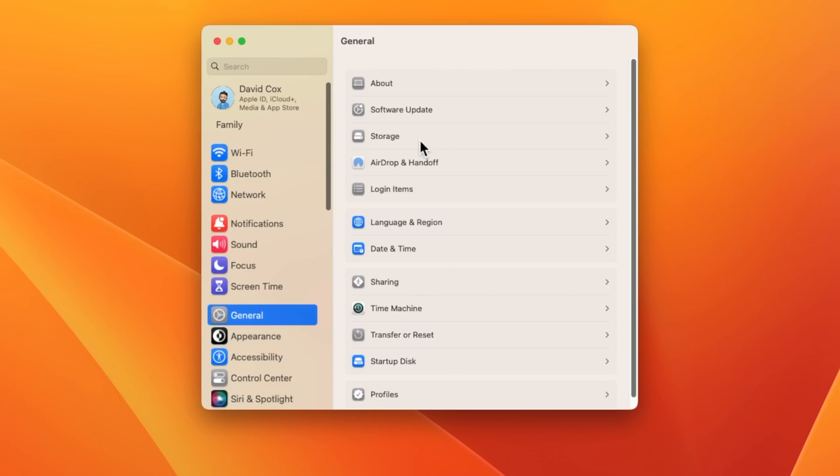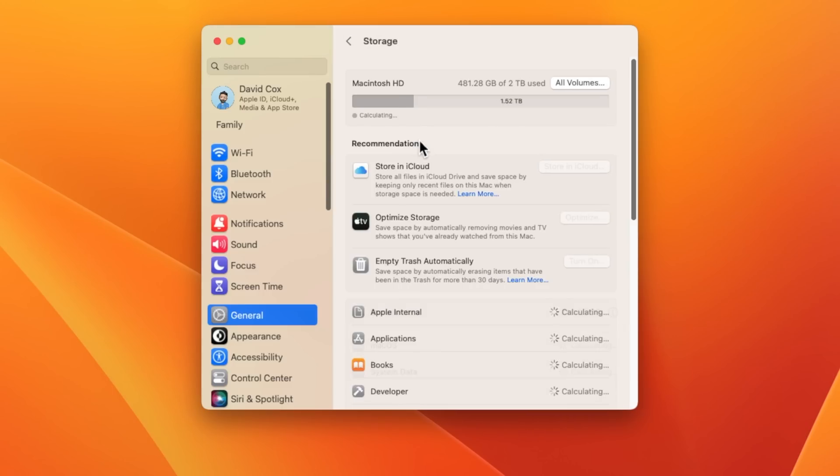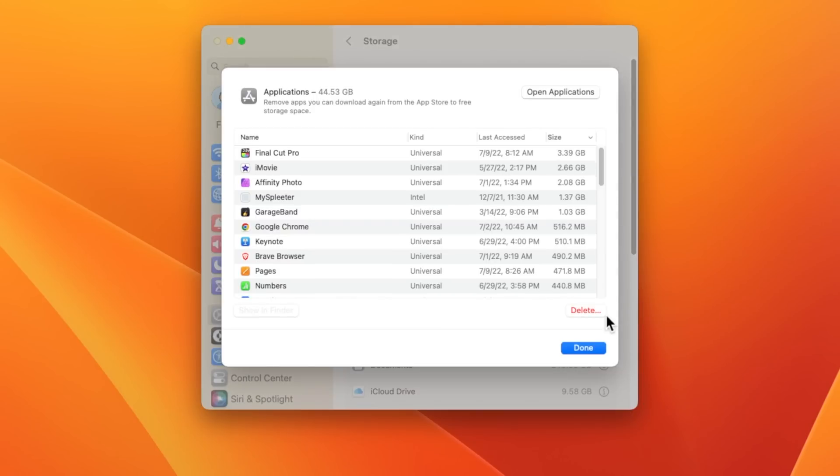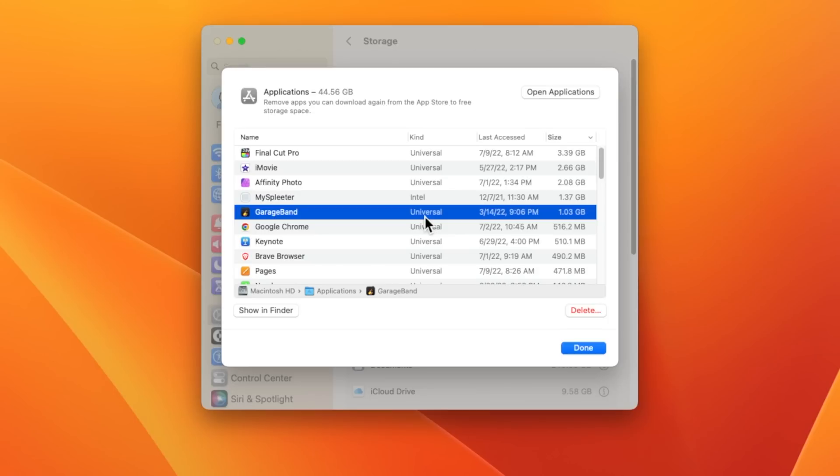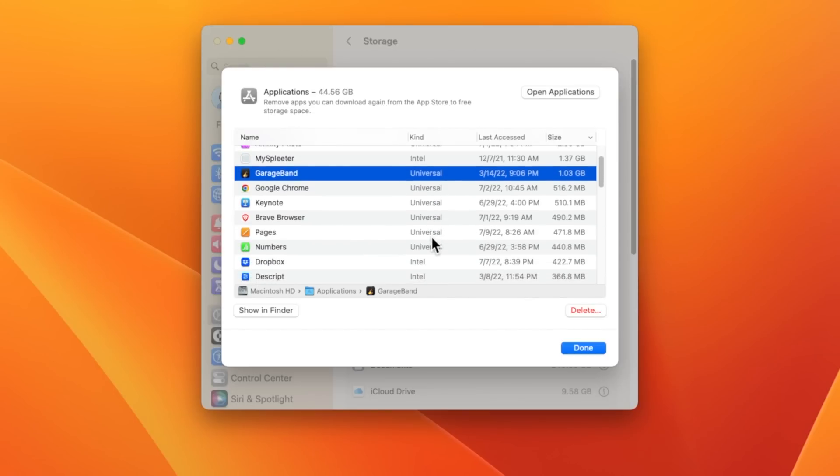In the past, if you ever needed to uninstall an app, it was relatively easy, provided that it came from the App Store, but not so easy if you got it elsewhere. Check this out. If we go into Storage, and then click on the Inspector icon next to Applications, I can see a full list of every single app on my Mac, regardless of where it came from. And here at the bottom is an option to delete.